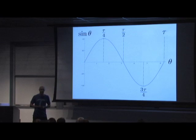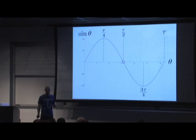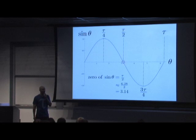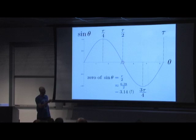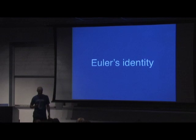When I was first making this diagram for the Tau Manifesto, I found myself idly wondering about the zero of sine. I thought, what is that? It's τ/2, which is 6.28/2, which is 3.14. And I had this sense of vertigo — it was really surreal. I realized I had already stopped thinking in terms of pi. The usage of tau was so natural that I had started thinking of this as half a period, which is τ/2.